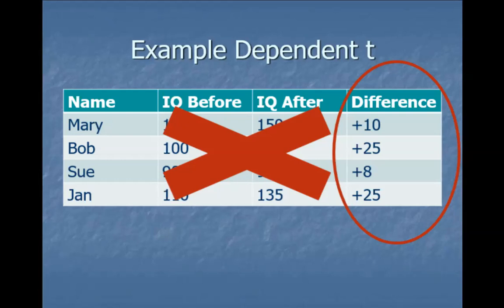Maybe somebody went up one or two points by chance, but we would expect it roughly to be zero. So what we're going to do is look at our true difference — what we actually got — and see how it differs from the expectation of being zero.